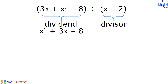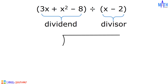x minus 2 is already written in standard form. If there is any missing term in the dividend, we need to write the missing term having 0 as the numerical coefficient. Let us write inside this long division symbol the dividend, x squared plus 3x minus 8. Outside is the divisor, x minus 2.